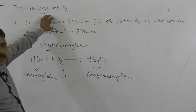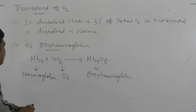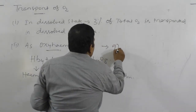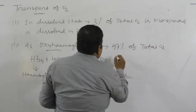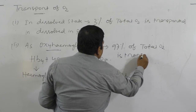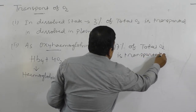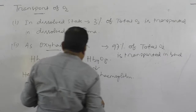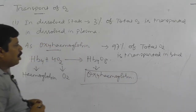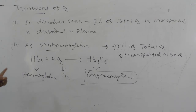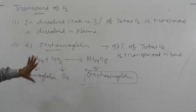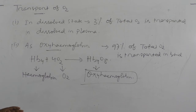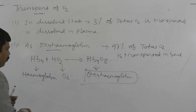To summarize oxygen transport: 3 percent of total oxygen is transported in dissolved state in blood, and 97 percent of total oxygen is transported as oxyhemoglobin. Because one molecule of heme is attached with one molecule of oxygen, and there are four heme groups, four molecules of oxygen are transported by one hemoglobin molecule.